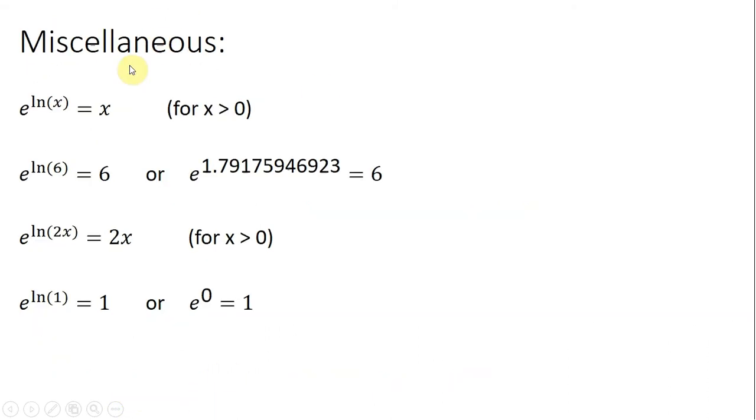Some miscellaneous things that you should be aware of. e raised to the natural log of x is just x. e raised to the natural log of 6 is just 6. So if you note here, what is the natural log of 6? It's 1.79. And e raised to that is just 6. Also, if e raised to the natural log of 2x is just 2x, e raised to the natural log of 1 is just 1.